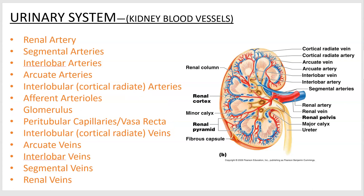The blood then goes back the same way it came, with the same names: cortical radiate veins, arcuate veins, interlobar veins, segmental veins — you may not see segmental veins listed everywhere, but they exist — and finally the renal vein. It just goes up and back, same blood vessel names, replacing artery with vein.